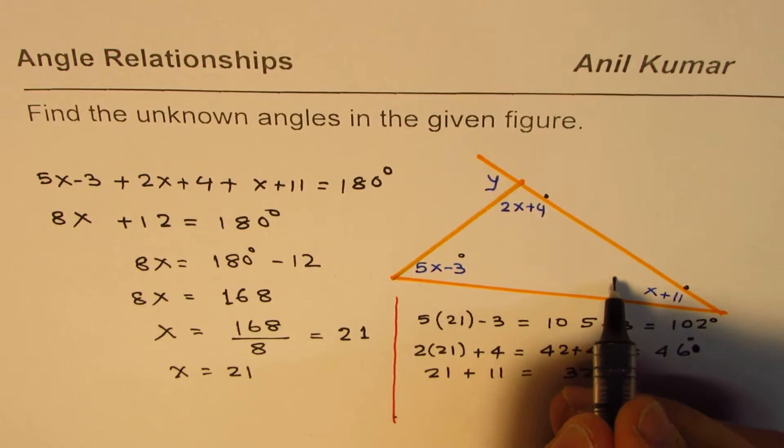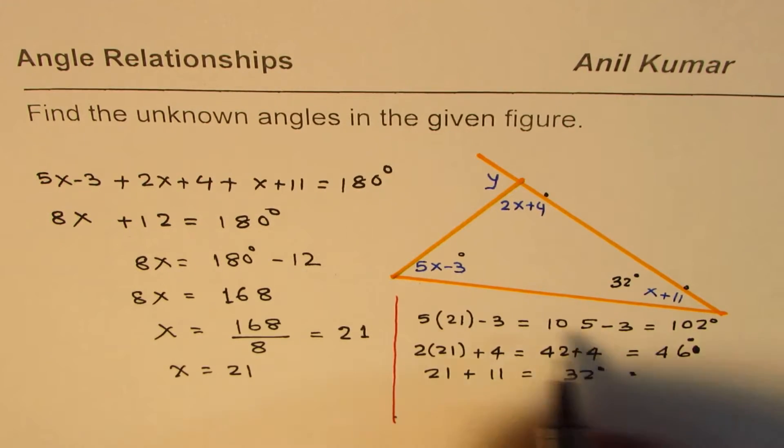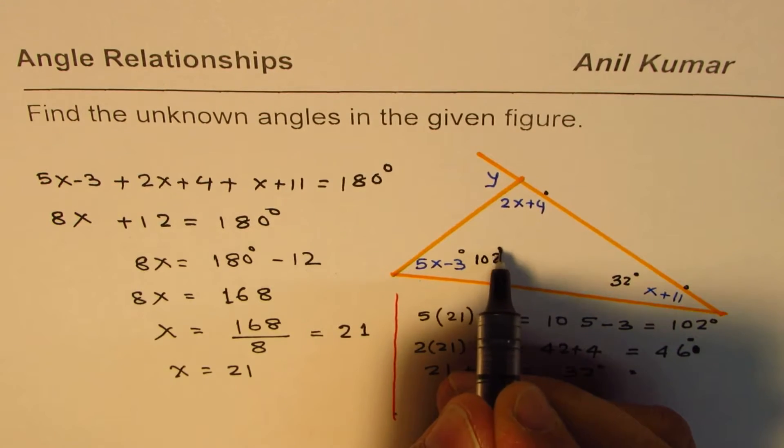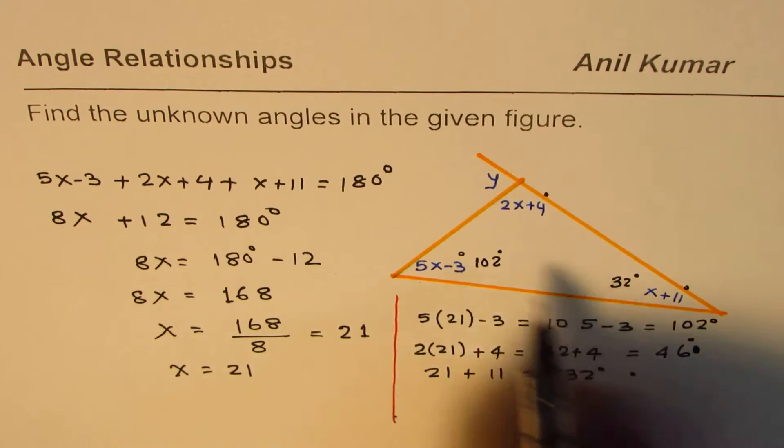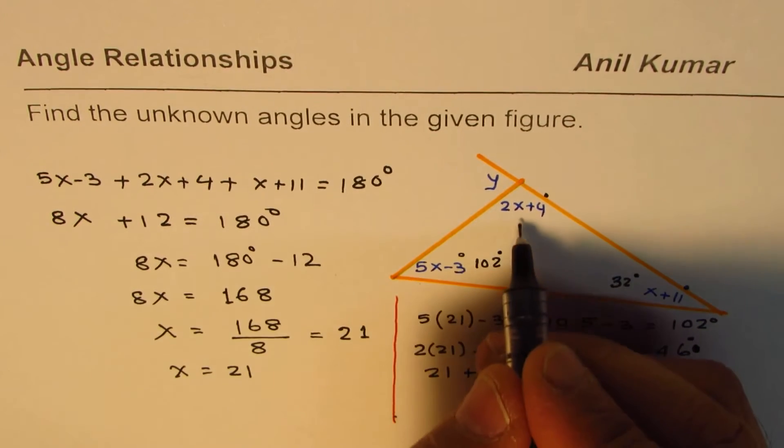So let me write down, this is actually 32 degrees, this one should have been 102 degrees, and then we have 2x plus 4 is 46 degrees.